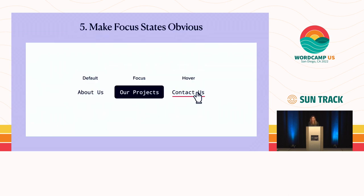Number five: make focus states obvious. Create focus states in your designs — reversing colors is a great way to have a very obvious focus state, as is using a contrasting outline. Be sure to provide development with everything they need to be successful. If you don't give developers states, sometimes there might not be any. I've seen this happen where someone had a beautiful design but didn't include any hover or focus states, and the design came back from development where there just weren't any.